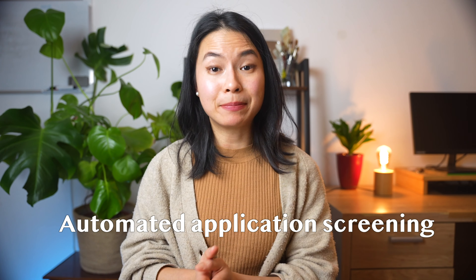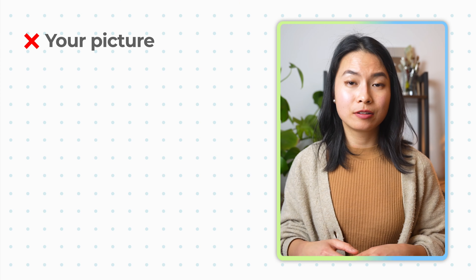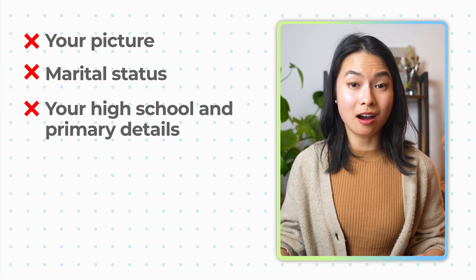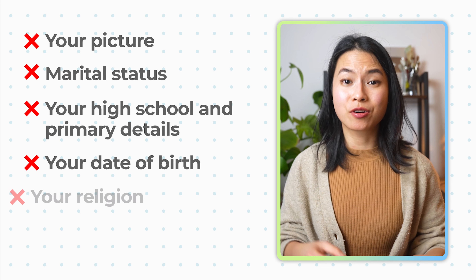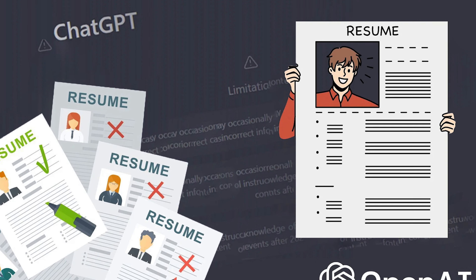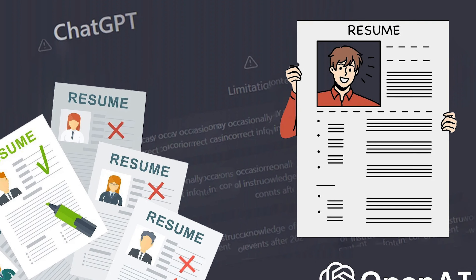I also want to mention some final tips. AI is very helpful, but it can also work against you. As automated application screening is being used more widely, especially in large companies, you don't want any unnecessary details that may negatively impact your applications. Biases in machine learning models exist, so remove any unnecessary details like your picture, your marital status, your high school and primary education if you have attended college, your date of birth, your religion, and any irrelevant work experience.